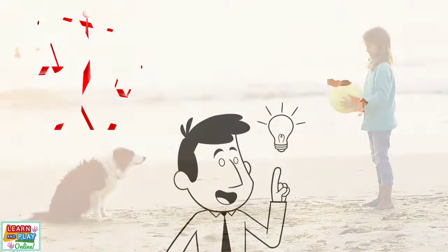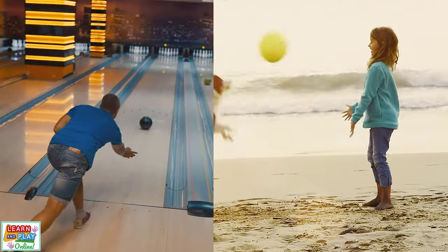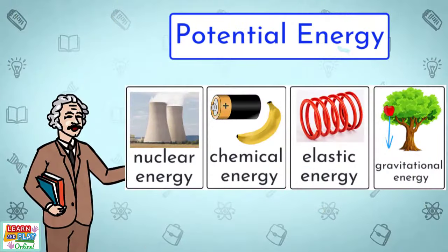The bigger or heavier the object, the faster it will come down. We hope you have enjoyed learning about the four forms of potential energy that were explained in this video.